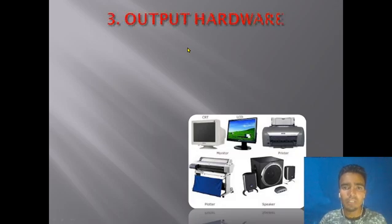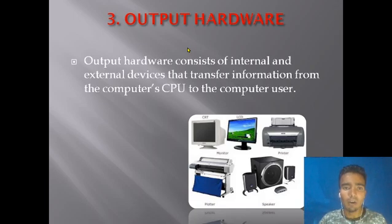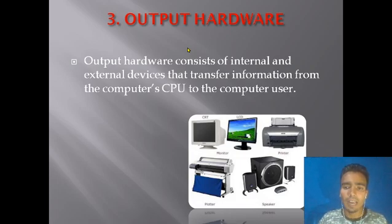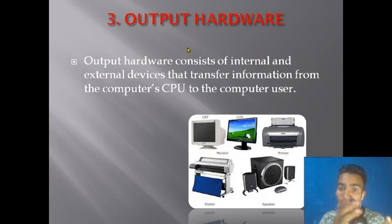Next, output hardware. Output hardware consists of internal and external devices that transfer information from the CPU to the computer user. The computer takes inputted information, the CPU processes it, and then the result is delivered through output hardware.